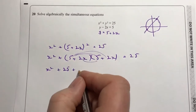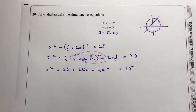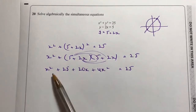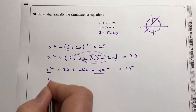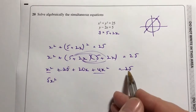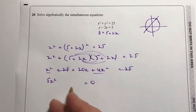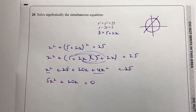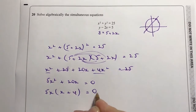Expanding (5 + 2x)²: that's 10x + 10x which is +20x, and +4x². So I have x² + 4x² + 20x + 25 = 25. Gathering like terms: 5x² + 20x = 0 — the two 25s cancel. Now I can factorize by 5: 5x(x + 4) = 0. The fact that we end up with only two terms makes this a much simpler factorization.